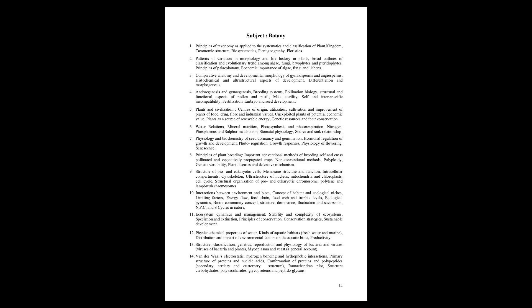Next to the Ascomycota, the largest number of lichenized fungi occur in the unassigned fungi imperfecti. Comparatively few basidiomycetes are lichenized, but these include agarics such as species of Lichenomphalia, clavarioid fungi such as species of Multiclavula, and corticioid fungi such as species of Dictyonema.